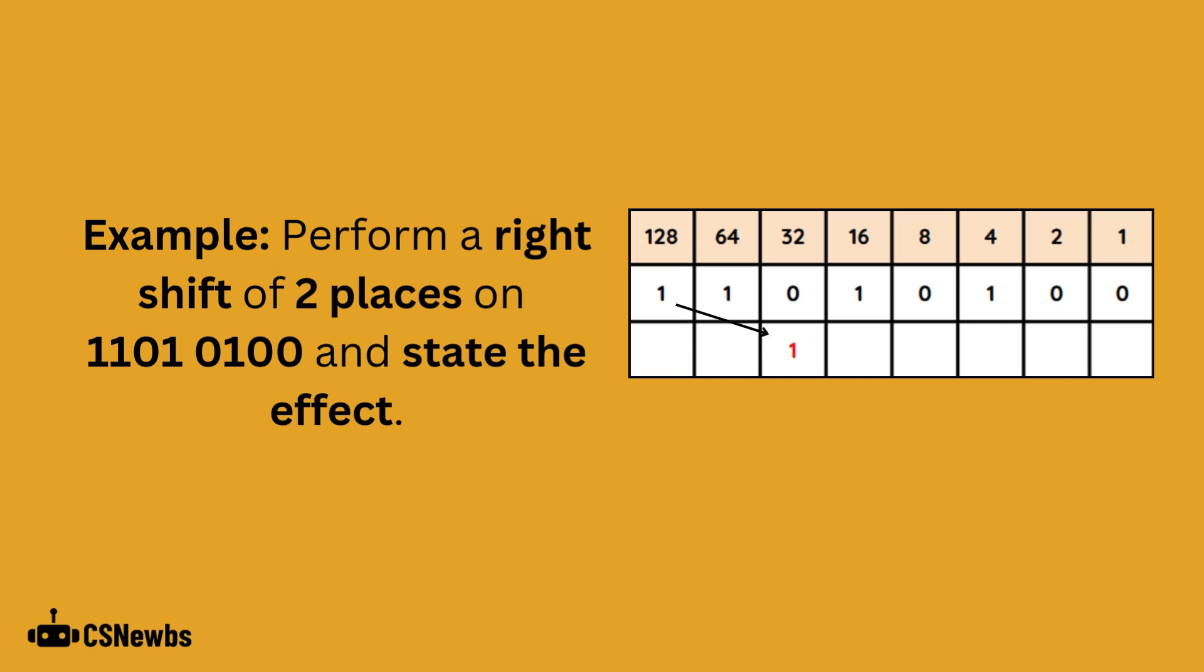Each binary value needs to be shifted two places to the right, so the one in the 128 column moves into the 32 column. The one in the 64 column is moved over to the 16 column. This continues for the other values in the number, each being shifted two places to the right.